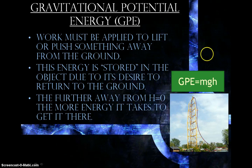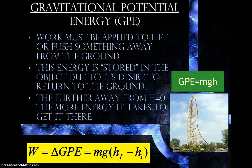The instantaneous gravitational potential energy is relative to the mass, the gravity, and the height that you have lifted it above the ground. If we wanted to calculate the work that was done in order to lift this up, we could calculate the change in gravitational potential energy, using the change in heights from one relative position to the other to see how much energy was added or changed by doing work on the object.